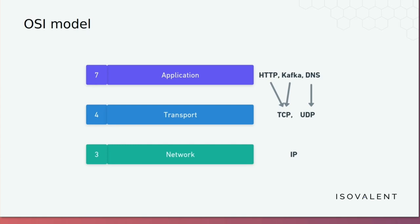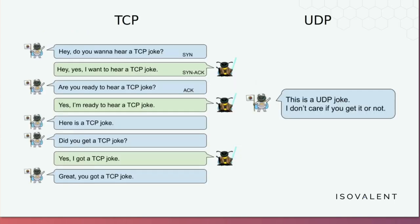Some people might be wondering why there are two layer 4 protocols. This is my favorite explanation of the difference between TCP and UDP. In TCP, how the communication looks is: 'Do I want to hear a TCP joke? Yes I do. Are you ready to hear a joke? Yes I am.' It's super verbose, but thanks to that verbosity we can have reliability — TCP is resilient to packets coming in incorrect order, duplicated, or missing. UDP is simply: 'This is a UDP joke and I don't care if you get it or not.' Of course it's faster but less reliable.